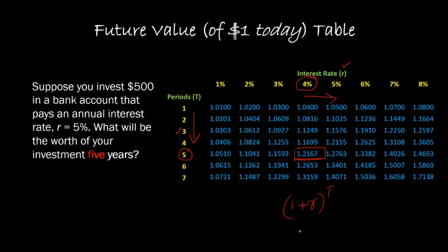and you plugged in 4 for r, which is 4%, and raised it to the power t, where t is 5. That amounts to 1.2167.